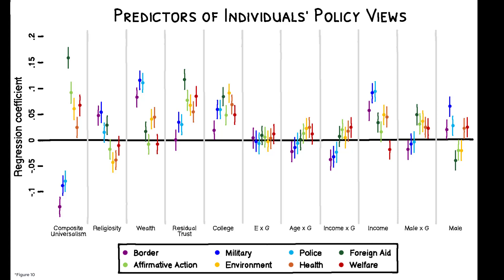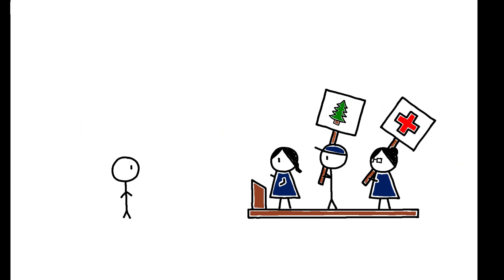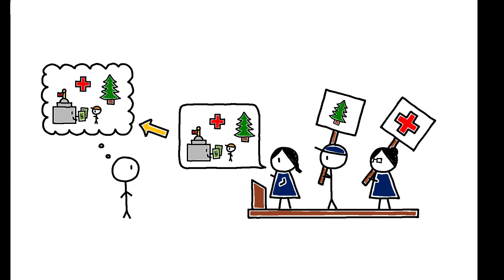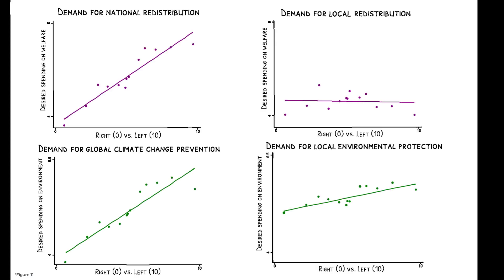These results support the argument that universalism systematically shapes policy views, but one potential concern is the role of political parties. An individual's support for a policy may be entirely determined by their party's stance on the issue, rather than by their own preferences. These figures rebut this by demonstrating that people's views on broad policy domains depend on how universalist the specific implementation of the policy is.